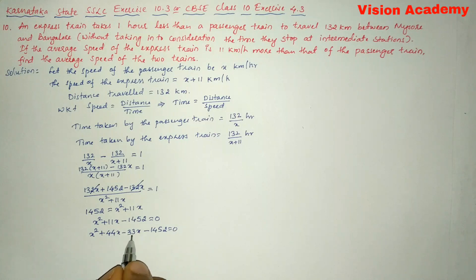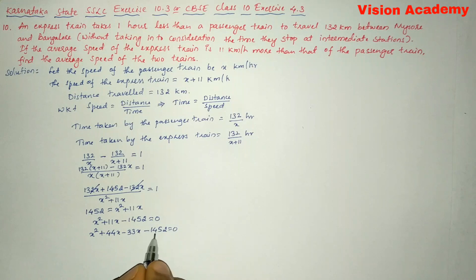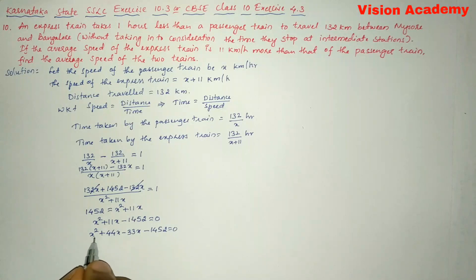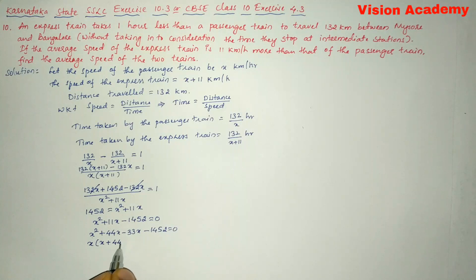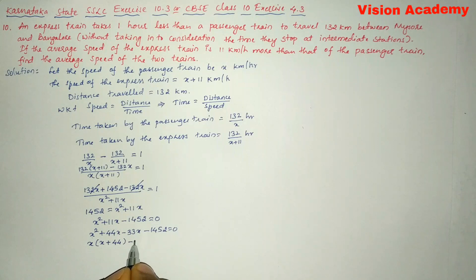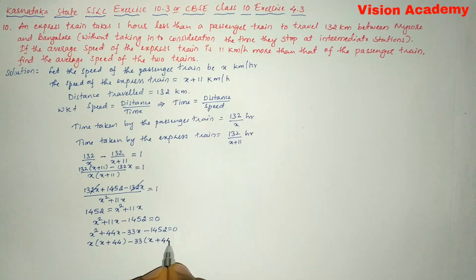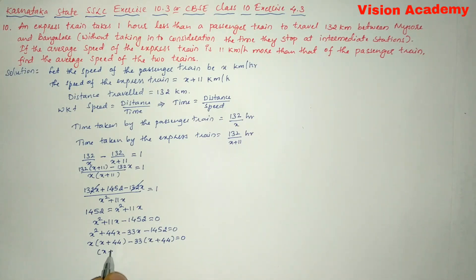Taking the first two terms, the common factor is x, leaving x plus 44 inside the bracket. For the next two terms, we take out minus 33, leaving x plus 44 inside the bracket. This gives us x plus 44 into x minus 33 equals zero.